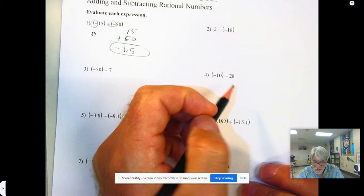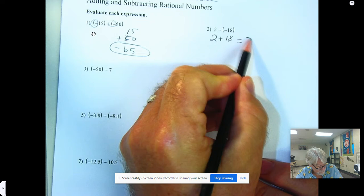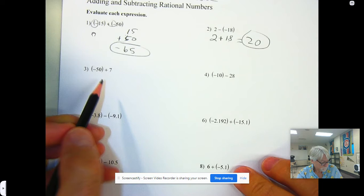When you're subtracting, you need to change that to adding the opposite. Instead of subtracting negative 18, add positive 18. Now we're adding two numbers with the same sign. Add them and use that sign.